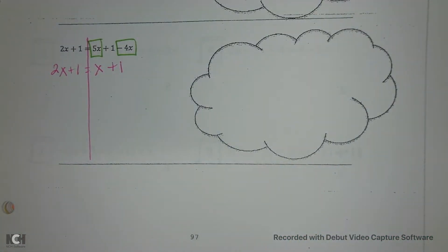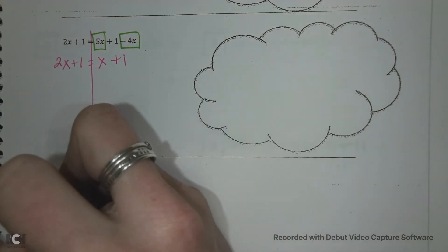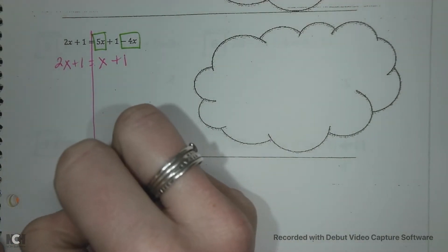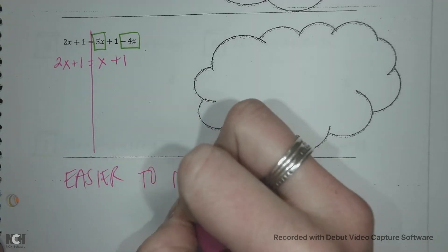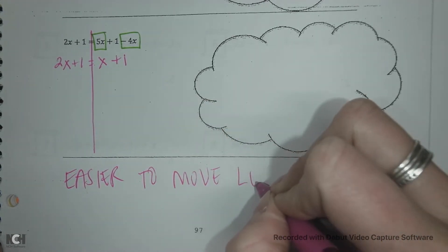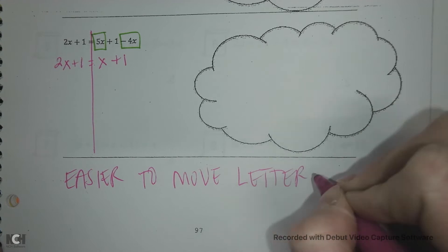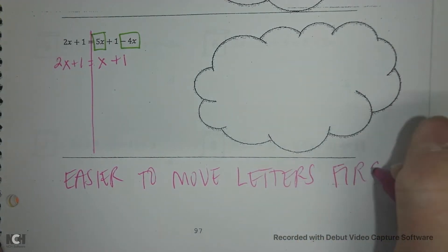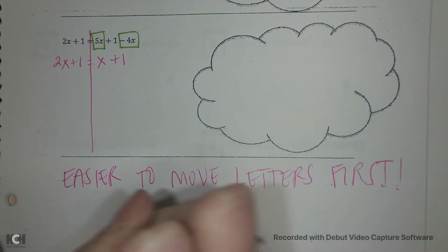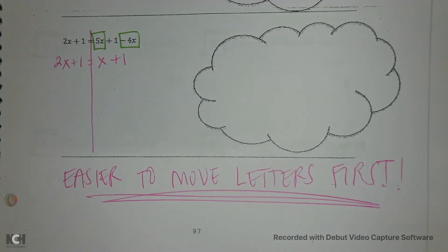Now I want to get all the letters to one side and all of the numbers on the other side. It's easier to move letters first. Okay, so that's my suggestion. Move the letters together first.